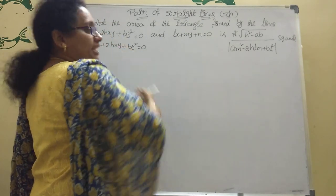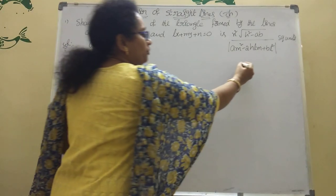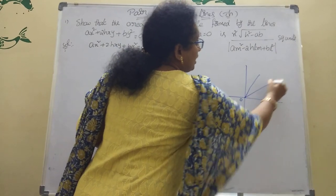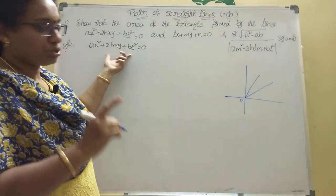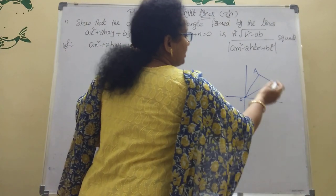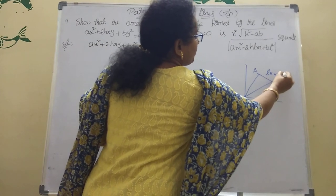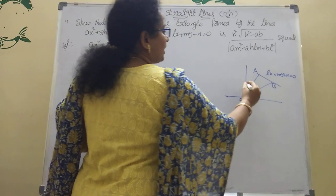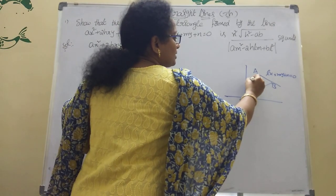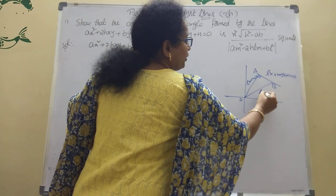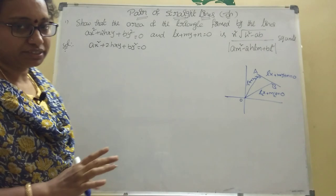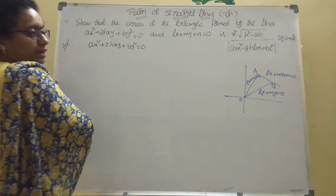Now, the lines AX² + 2HXY + BY² = 0 — how will you draw this? See here, this is passing through the origin. In this, two lines are there. The pair of straight lines general formula is this — passing through the origin. This first line is OA, second line is OB. And here the given line AB is LX + MY + N = 0. This is the given pair of straight lines.